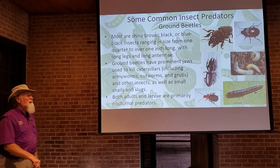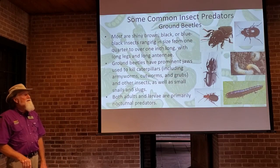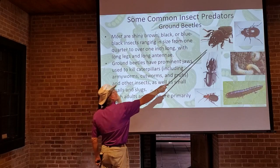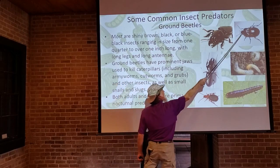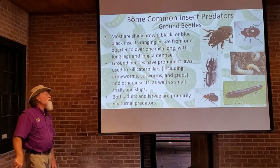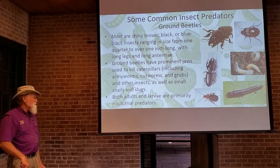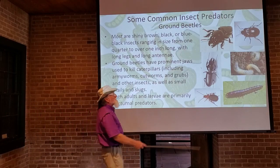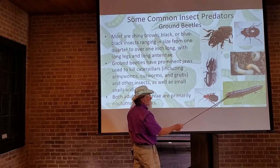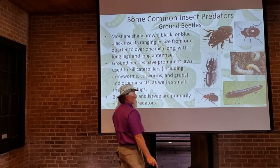Ground beetles are also Coleoptera — most are shiny brown, black, or blue-black insects ranging from one-quarter inch to over an inch long, with long legs, long antennae, and prominent jaws. They use those jaws to kill caterpillars including army worms, cutworms, and grub worms, as well as other insects, and small snails and slugs. Adults and larvae primarily feed at night. They are very, very good to have in the garden.